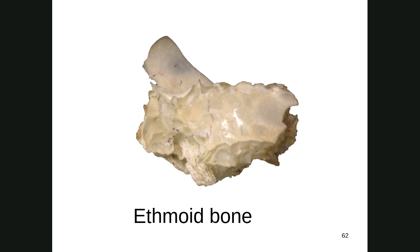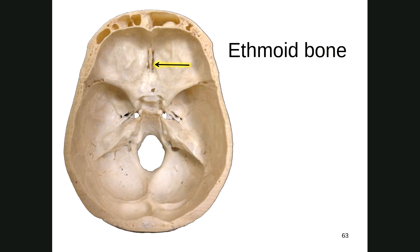The ethmoid bone sits at the top of your nasal cavity. This is a lateral view of it. When you see it from the front, it's a funky-looking bone — it sits like an island within the frontal bone. This part here is part of the ethmoid bone; on either side of it is all frontal bone.